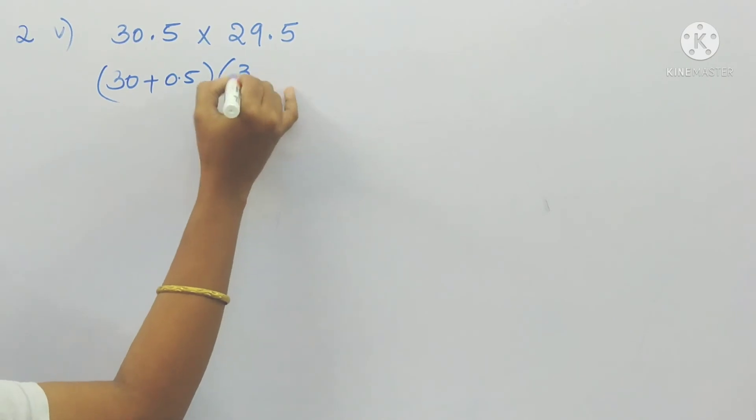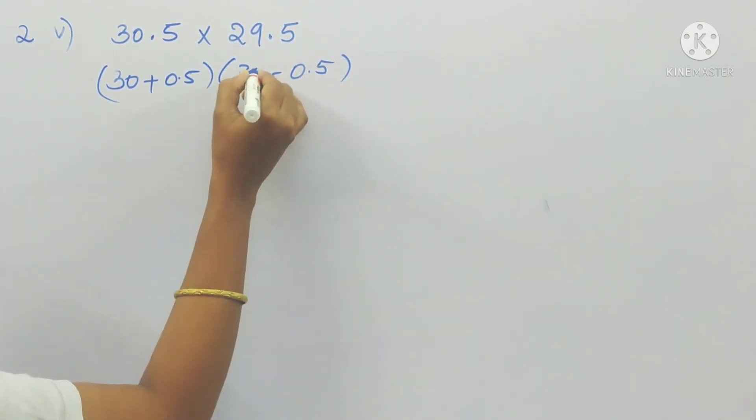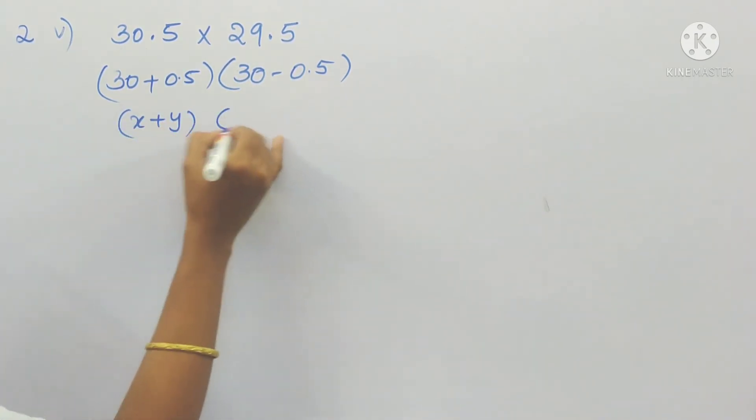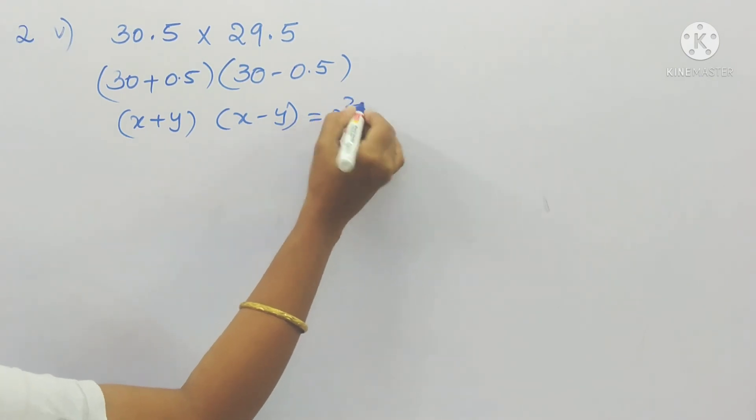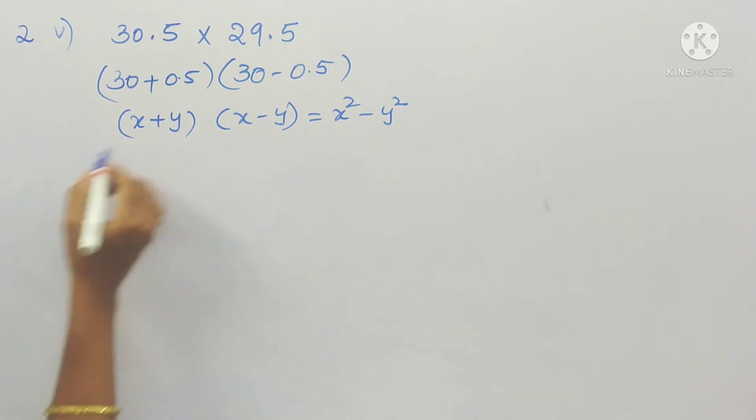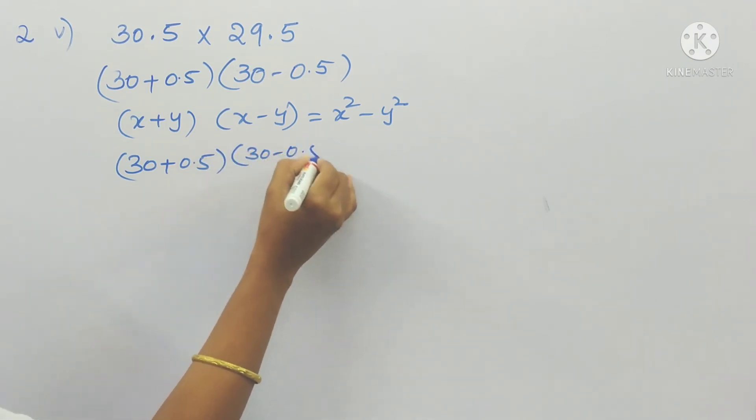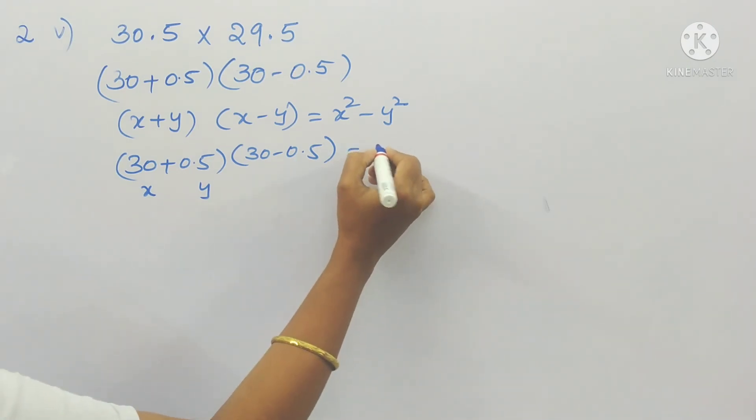So next, last one is second problem. 30.5 into 29.5. So 30.5 I can write as 30 plus 0.5 into 30 minus 0.5. So now it is in the form of x plus y into x minus y. So it is x squared minus y squared.